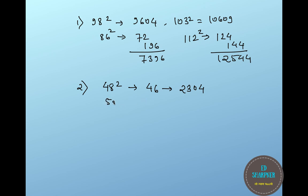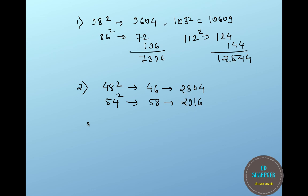Similarly for numbers above 50, like 54: add 4 to 54 to get 58, halve it to get 29, then write the square of 4, which is 16, after 29 — giving 2916. You can extend the same technique for the primary base of 1000 and secondary base of 500. Use whatever technique you like.